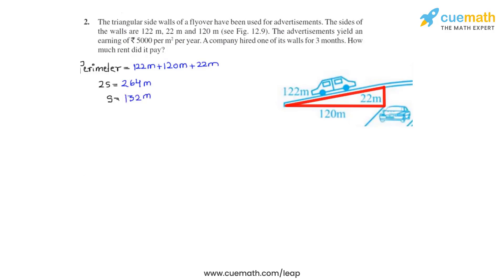Now that we have calculated the semiperimeter, our next step is to find the area. So for that we can calculate by making use of Heron's formula. So Heron's formula is a equals under root s times s minus a times s minus b times s minus c.